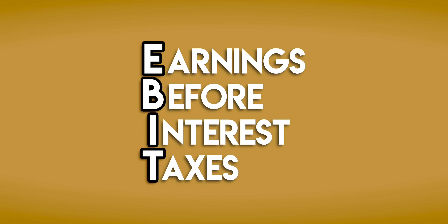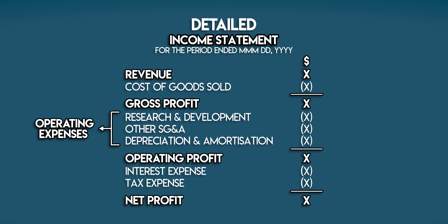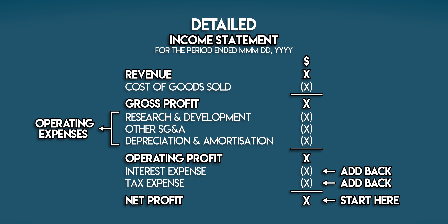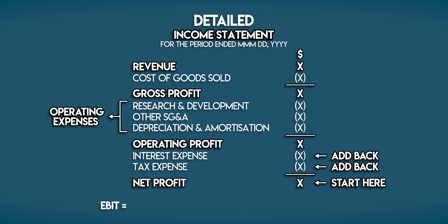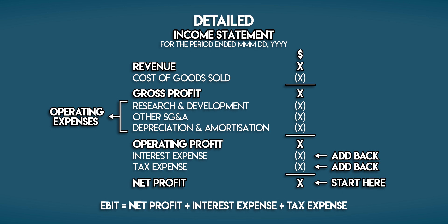So how can we calculate EBIT? EBIT stands for earnings before interest and taxes, and when we say earnings we mean profit. You can find a business's net profit on the bottom line of the income statement, so this is going to be our starting point for the calculation. 'Before' means that we're going to add back interest and tax. Interest expenses are the cost of borrowing money — it's a non-operating cost so it sits below operating profit. Tax expenses are what the business reckons it owes to the local tax authority for this accounting period. So EBIT is equal to net profit plus interest expenses and tax expenses.